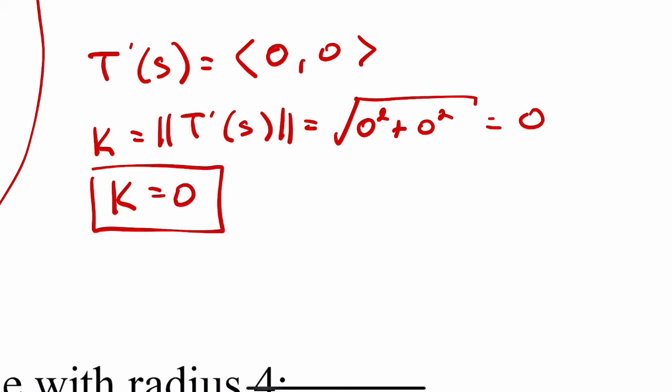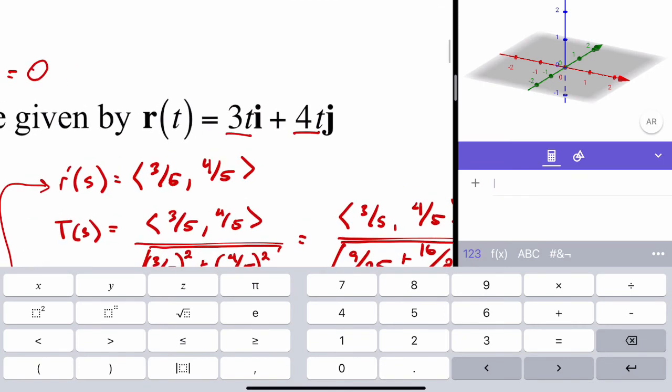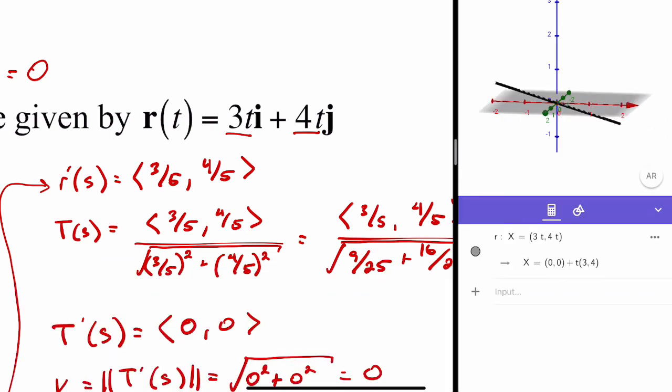Think for a moment what you think a K of 0 means. So to help determine what a K of 0 is, let's graph this vector value function. Even though the vector value function is in 2D,